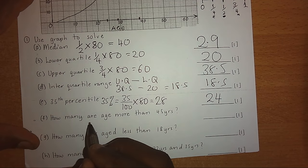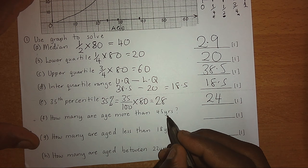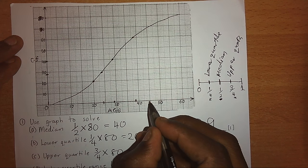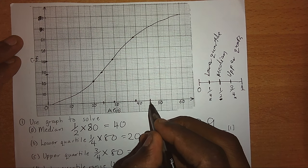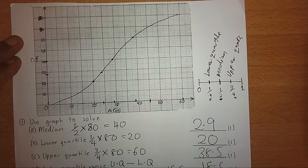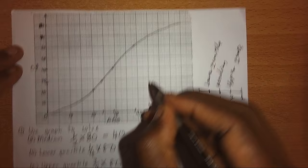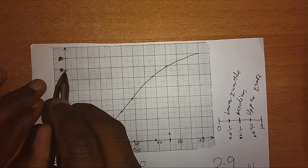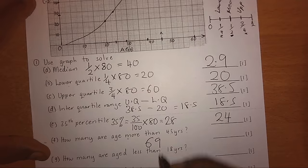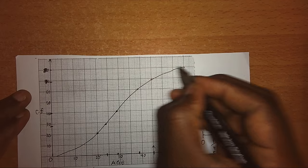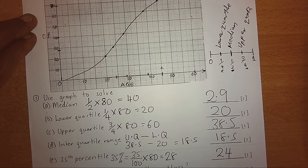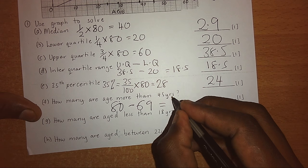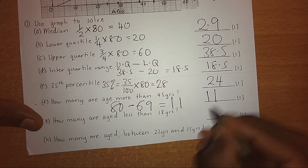How many are aged more than 45 years? We go to 45 on the horizontal axis, go up to the curve, and read the cumulative frequency — we get 69. Since the total is 80, that means 80 minus 69 gives us 11. So there are 11 people who are aged more than 45.